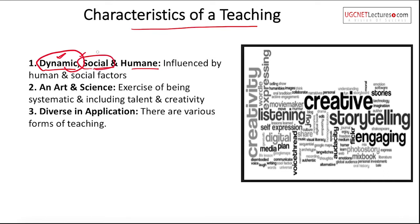Social and humane means a teacher should be social — able to mix well with students and create a friendly environment. Sometimes we don't learn with fear but with love or a loving touch. Teaching has to be very social, related to society, and humane — meaning related to human beings. Teaching is influenced by humans and social factors.